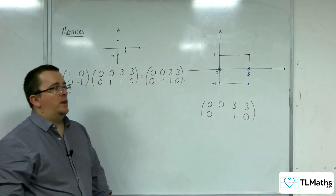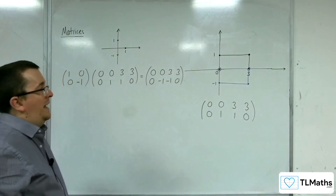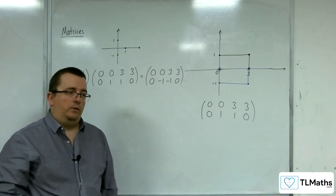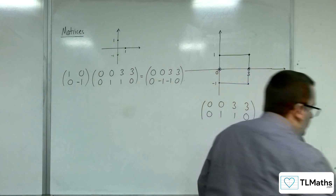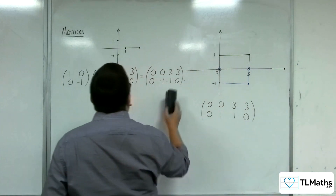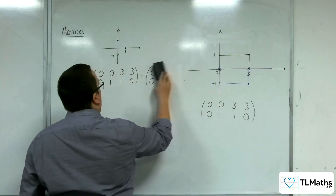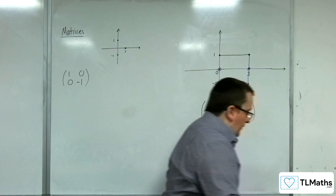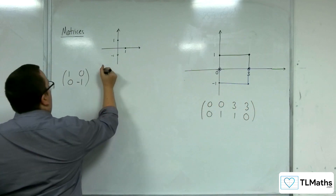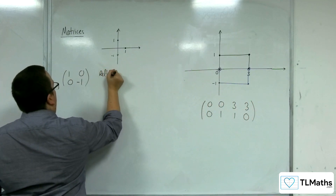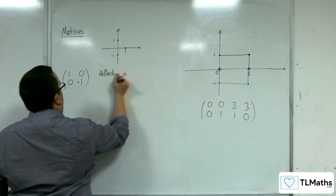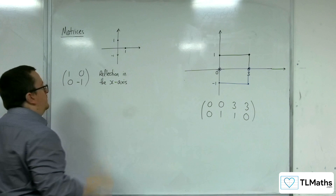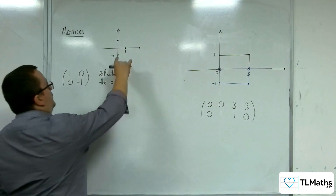And so our shape is there, and yes, it has reflected our rectangle in the x-axis. So we know then, through our investigation, that this matrix represents a reflection in the x-axis.